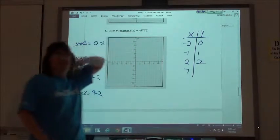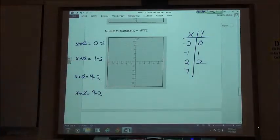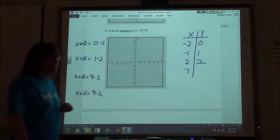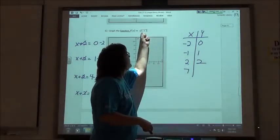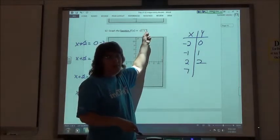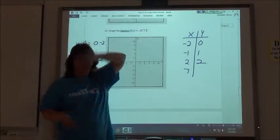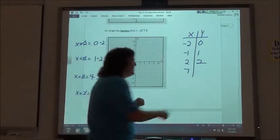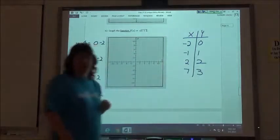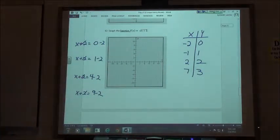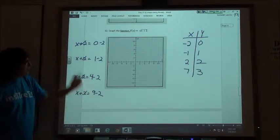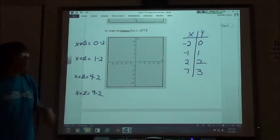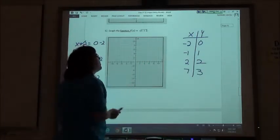And if we put the 7 in for x, 7 plus 2 would be 9, so the square root of 9 is going to be 3. So we get nice perfect squares underneath there by setting them equal to the perfect squares, and then doing our adding or subtracting, and then we can plot our points.